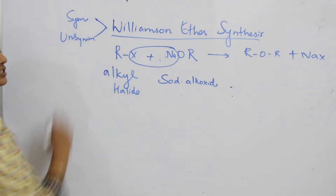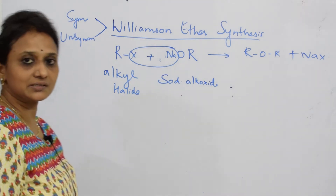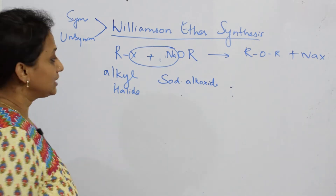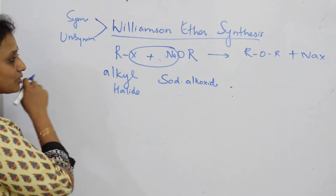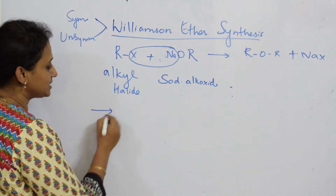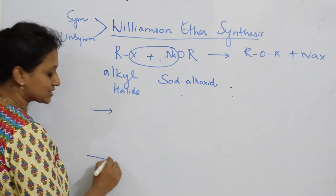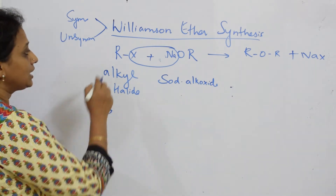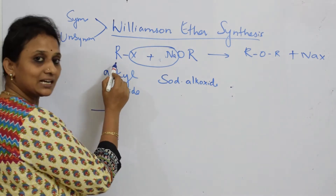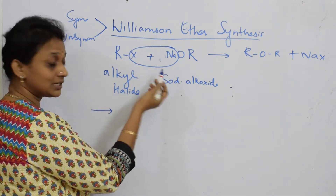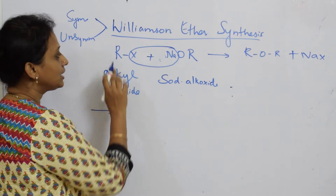Using Williamson Ether Synthesis, I can prepare both symmetrical and unsymmetrical ethers — both can be prepared. Remember this. Now, an important trick: this is your alkyl halide, and this is your alkoxide.